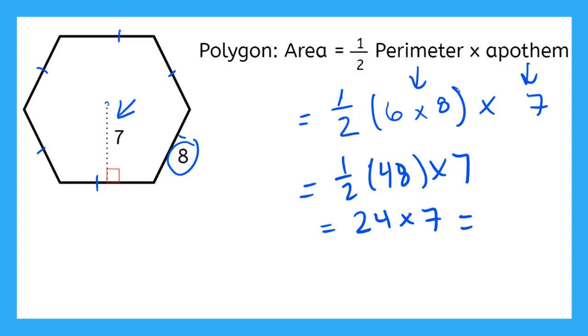Which, if you don't know off the top of your head, you can use a calculator for. 24 times 7 is 168. So that is the area of this regular hexagon.